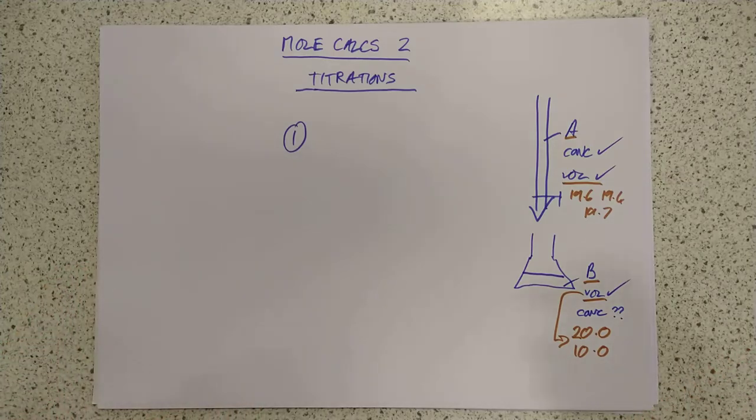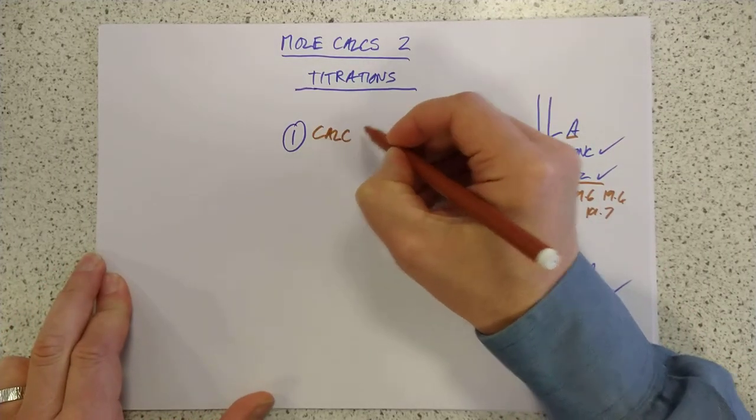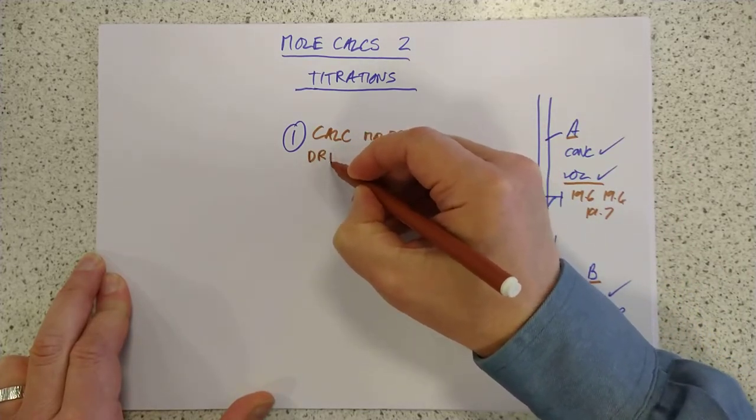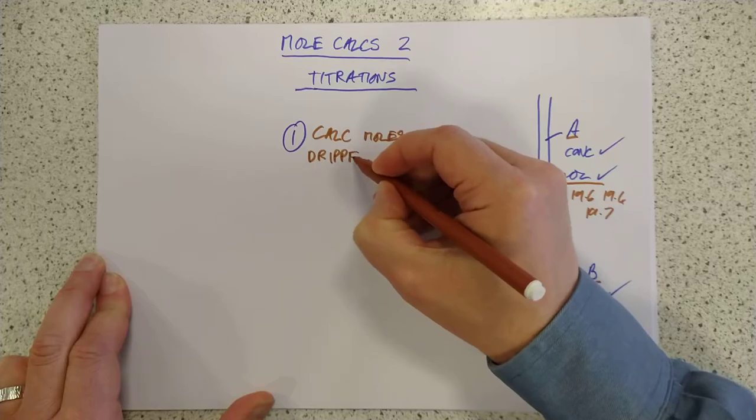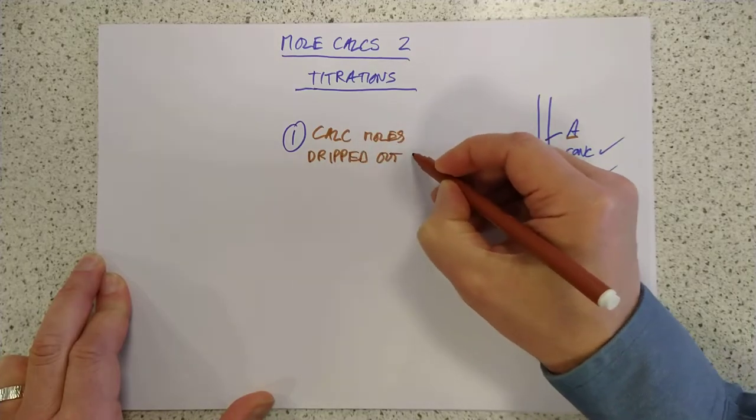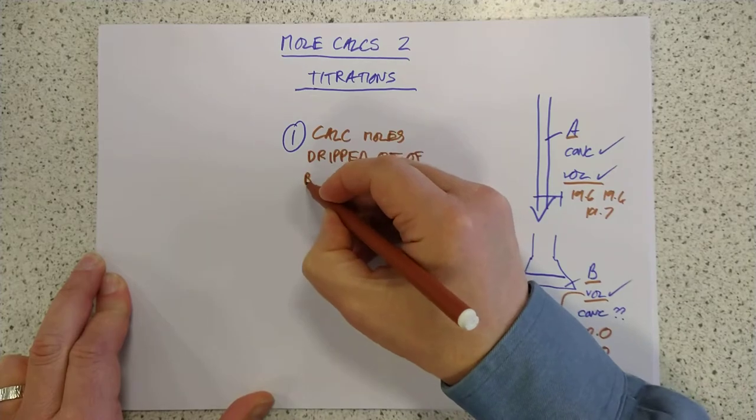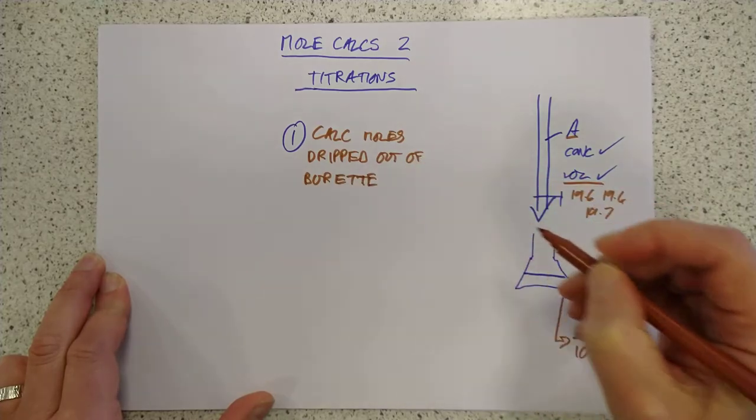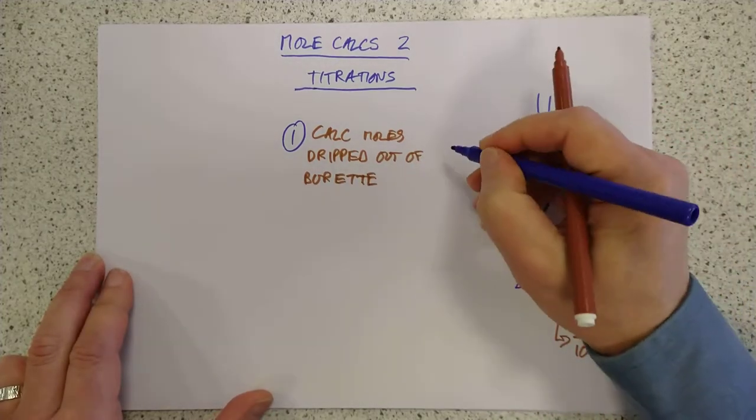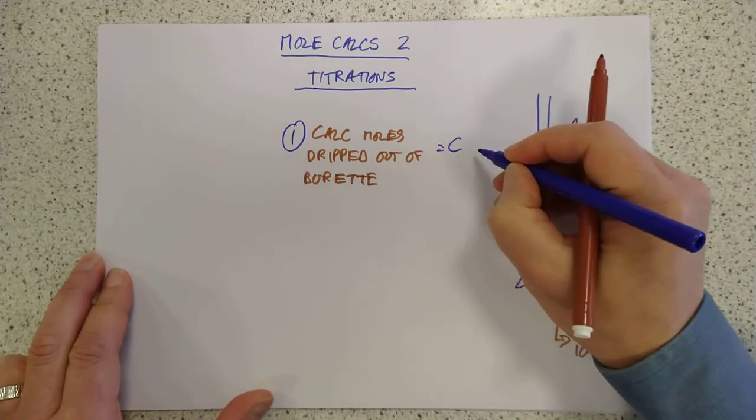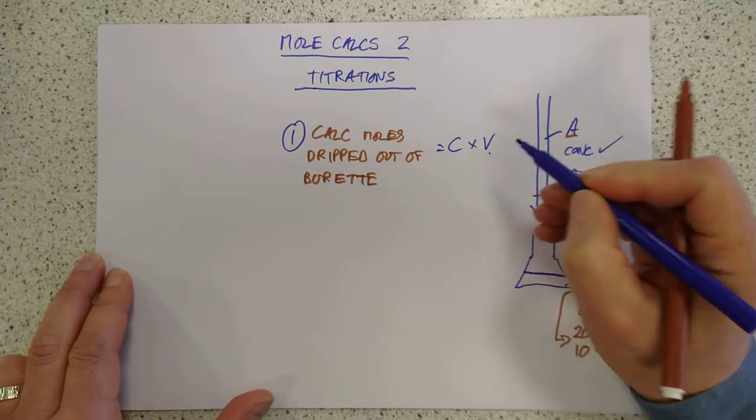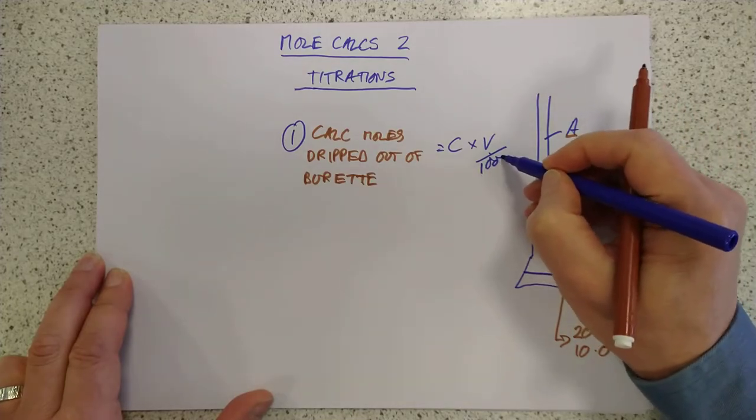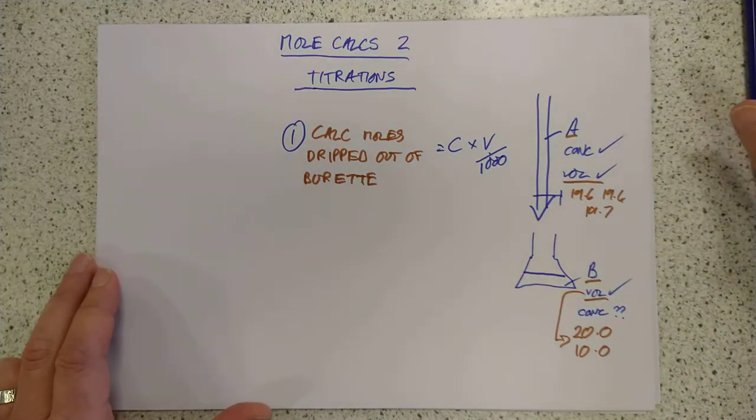Also, the volume on this, the volumes are always like nonsensical numbers like 19.6, 19.4, 19.7. Again, this one here is usually a set volume like 20.0 or 10.0 or something along these lines. So you can spot from the volume which one of these you're dealing with. Right, so what are the three stages? Stage one is calculate the moles that you dripped out of your burette when you were actually doing the titration. You do that by concentration times volume. Please remember that this has to be in liters. So they always give you a volume in centimeters cubed. So it's actually divided by 1,000 to convert it into a number of moles.